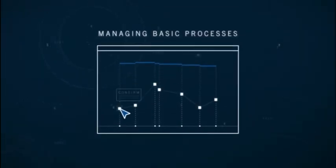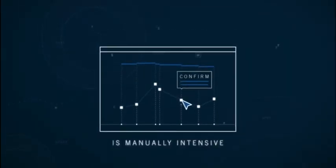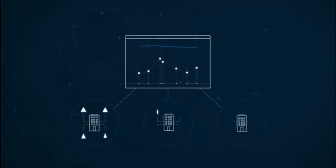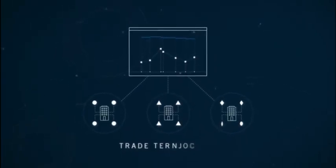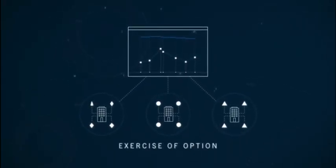Managing basic processes throughout the life of a trade is manually intensive. Each firm has developed its own way of describing common events like trade termination, compression, or the exercise of an option.